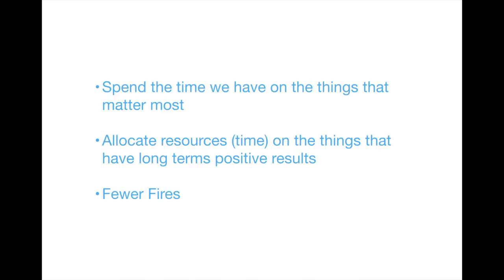At Priority Matrix, we look at productivity as the result of spending the time we're given on the things that matter most. Productivity is allocating the resources we have, that is, our time, to the things that have long-term positive results.